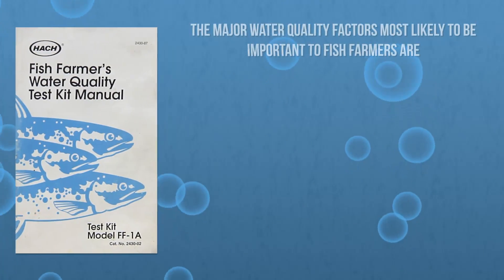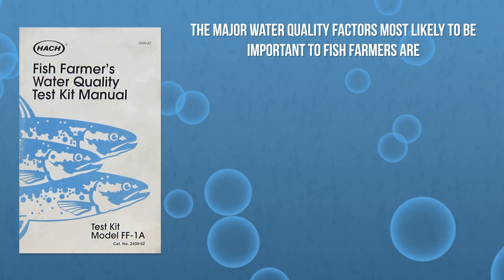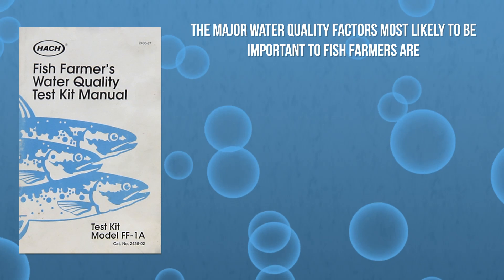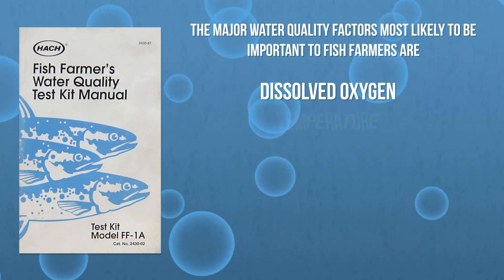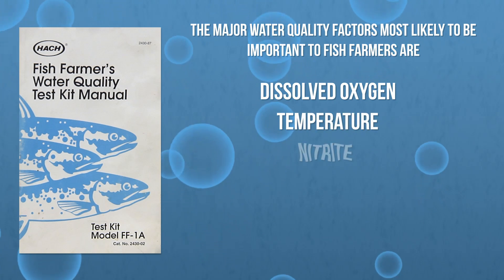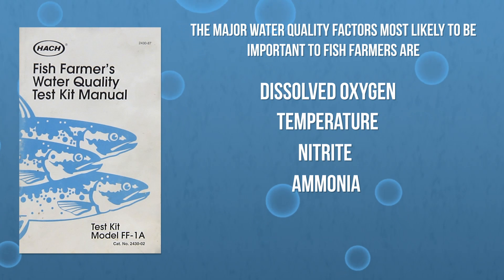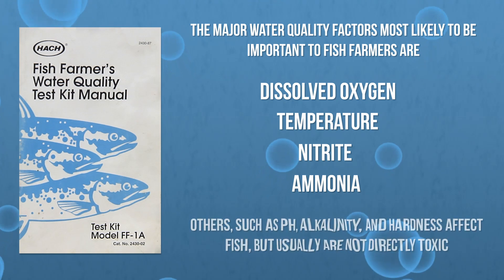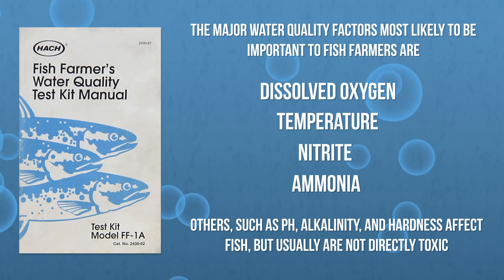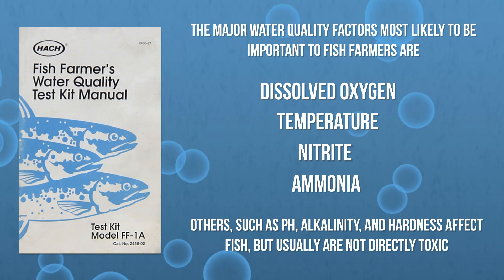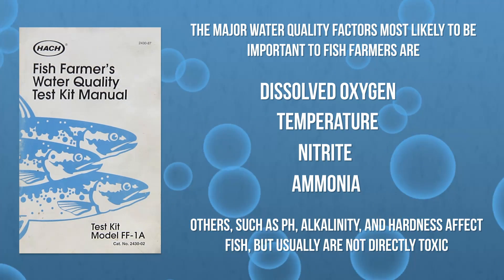The major water quality factors most likely to be important to fish farmers are dissolved oxygen, temperature, nitrite, and ammonia. Others such as pH, alkalinity, and hardness affect fish, but usually are not directly toxic.